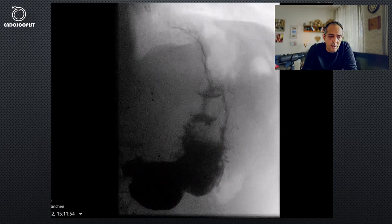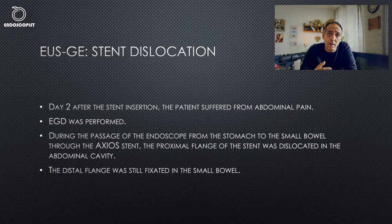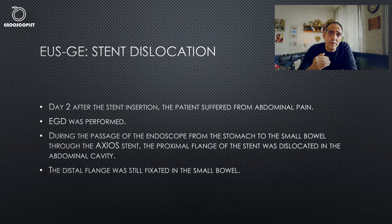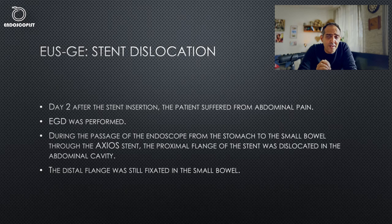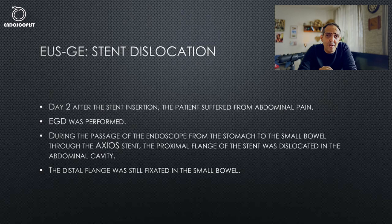Two days later, the patient suffered abdominal pain and they planned an EGD. During the upper endoscopy, a colleague passed through the stent from the stomach into the small bowel — which you should not do. You should not pass the scope through a freshly inserted gastroenterostomy because the dislocation risk is very high. And that is exactly what happened: the gastroenterostomy stent was dislocated into the abdominal cavity.